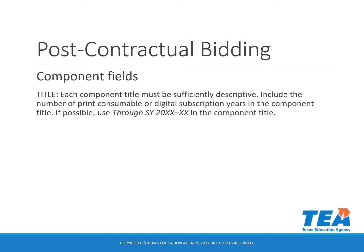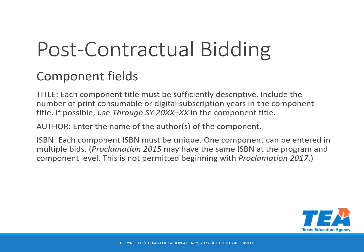Now we will walk through each of the component fields. Each component title must be sufficiently descriptive. You will need to include the number of print consumable or digital subscription years in the component title, and if possible, use the through school year format. In the author field, you will enter the name of the authors of the component. Each component ISBN must be unique — one component can be entered in multiple bids. With Proclamation 2015, you may have the same ISBN at the program and component level; this is not permitted beginning with Proclamation 2017.